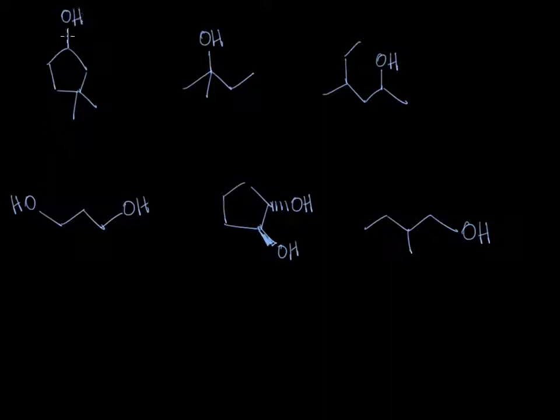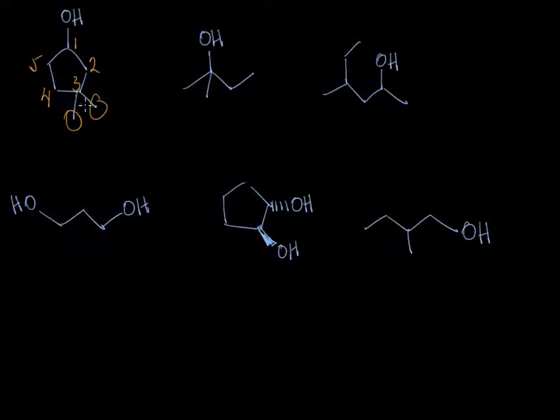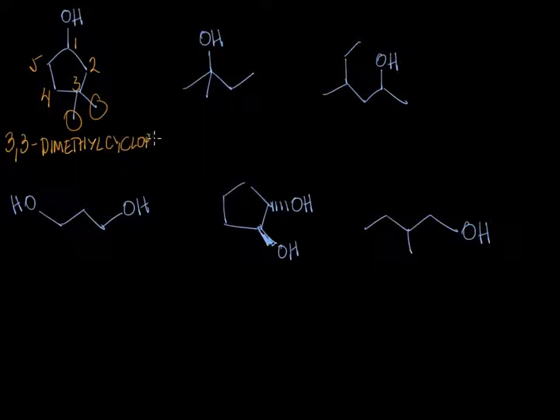Let's look at some more advanced alcohols that might be a little bit harder to name. Here we have a cyclic alcohol and it looks like it's a five-membered ring, so that's a cyclopentanol, and this particular molecule has a couple of methyl groups. Let's go ahead and number the ring. It looks like these methyl groups are at carbon-3 and the alcohol is at carbon-1, so the name of this would be 3-dimethylcyclopentanol.